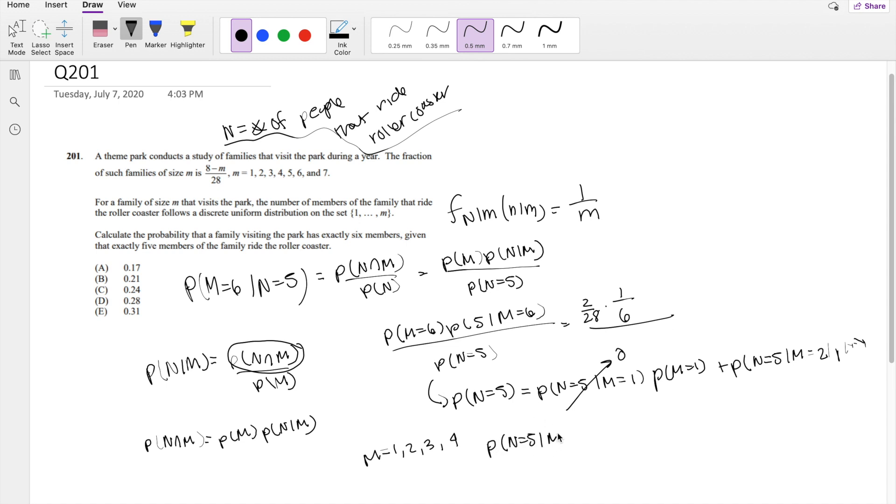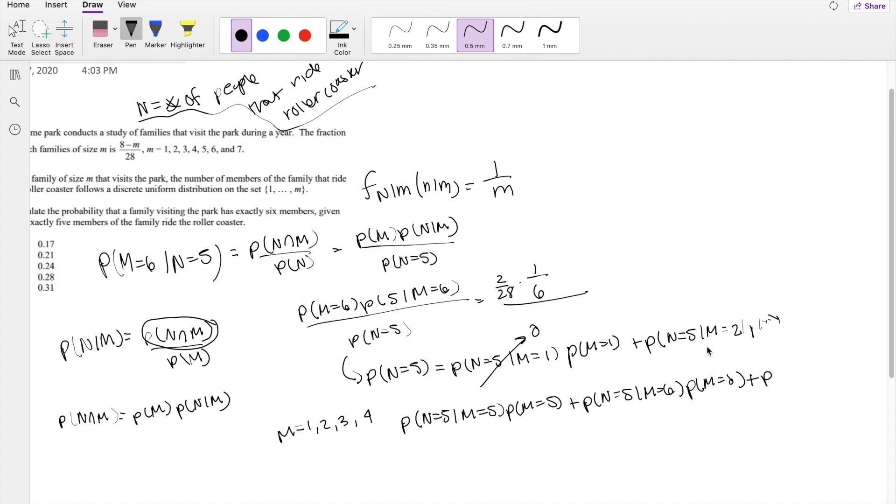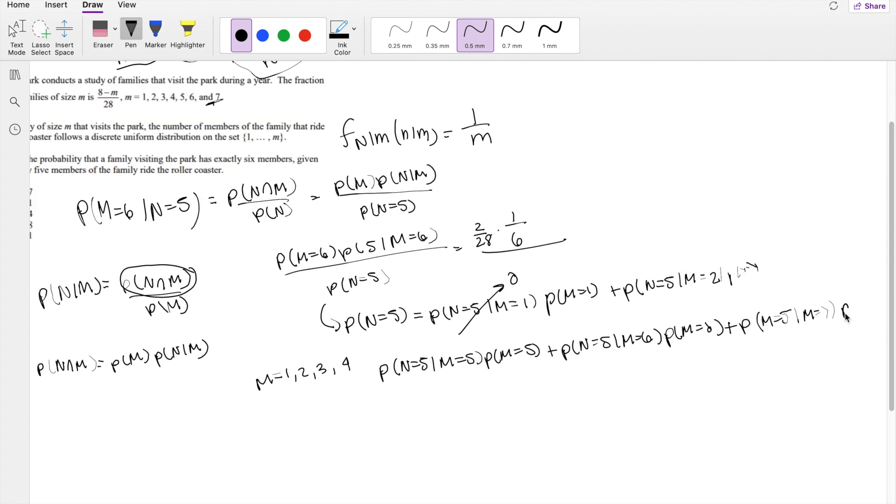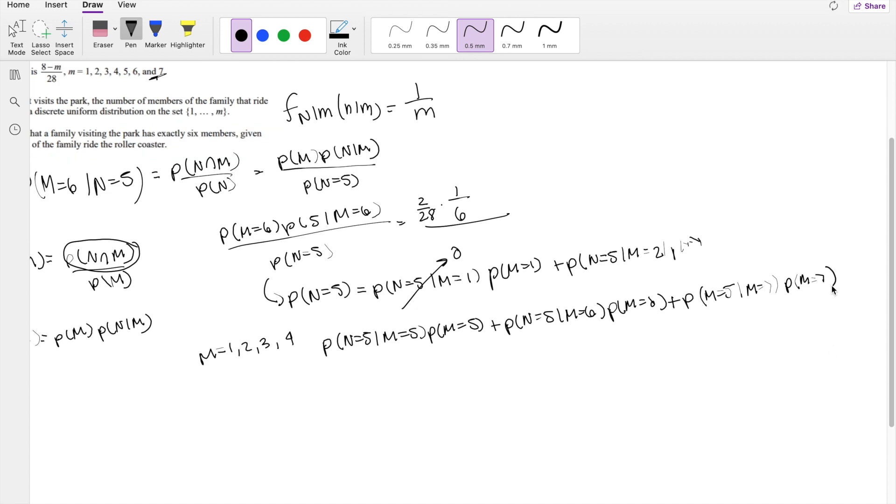But the thing is, if the number of people riding a roller coaster is 5, can you have just one person going? No. So you can't have, technically the probability of this is just equal to 0 because there's no way that 5 people ride the roller coaster given the only one person goes. So m can't be 1, 2, 3, or 4, but m can however be 5. So we can actually start this at n is equal to 5 given m is equal to 5 times the probability that m is equal to 5.